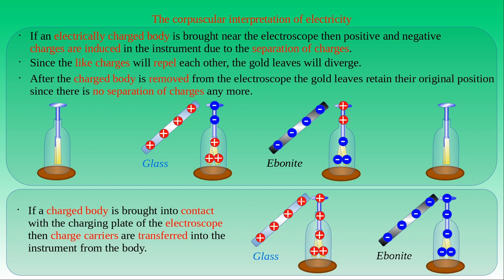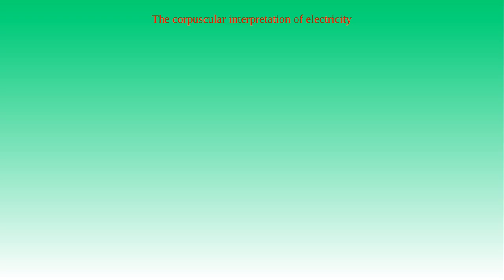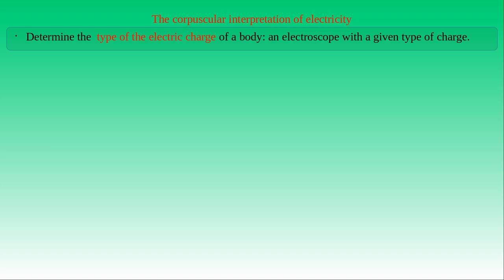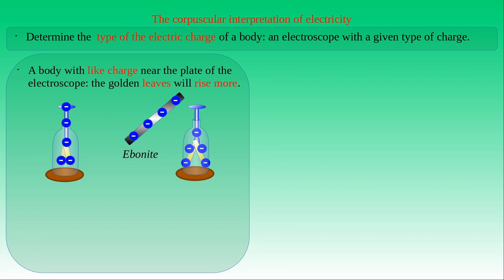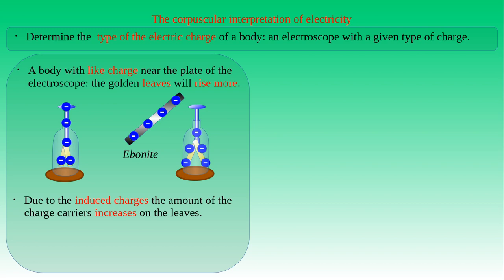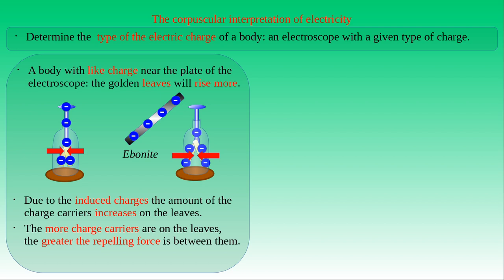If a charged body is brought into contact with the charging plate of the electroscope, charge carriers are transferred from the body to the instrument and it will attain the same type of charge. It is simple to determine the type of charge on a body using a prepared, already-charged electroscope. Suppose the electroscope has negative charge — its gold leaves diverge since the like charges on the leaves repel each other. If we bring a negatively charged ebonite rod near the charging plate, the gold leaves will diverge more. In general, bringing a body with like charge near the plate of a charged electroscope causes the gold leaves to diverge more. Due to the induced charges, the amount of negative charge carriers increases on the leaves, increasing the repelling force, so the leaves rise further.